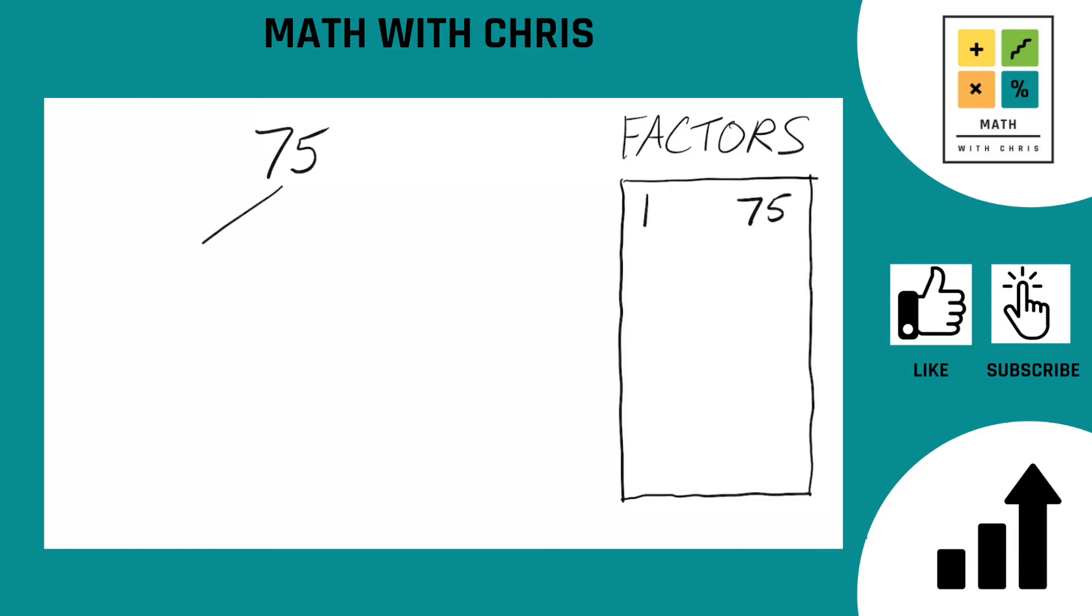Now we're going to break this down using a factor tree as always. What are two numbers that multiply together to give you 75? Not a whole lot of options here. Off the top of my head, the first thing that comes to me is 3 times 25.